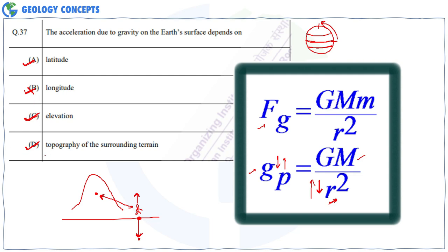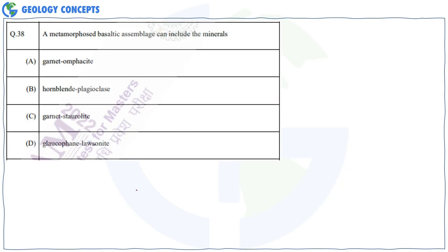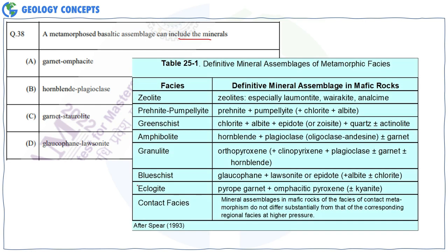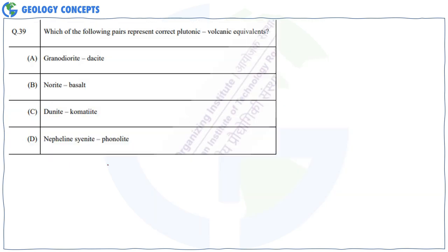Question 38: A metamorphosed basaltic assemblage can include which minerals? Basalt is a mafic rock. Garnet and omphacite are found in the eclogite facies. Hornblende and plagioclase belong to the amphibolite facies — correct. Garnet and staurolite are not found in mafic assemblages — wrong. Glaucophane and lawsonite are found in the blueschist facies — correct. Therefore A, B, and D are correct.